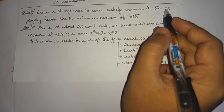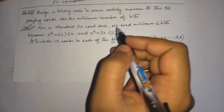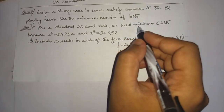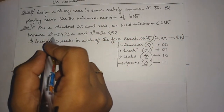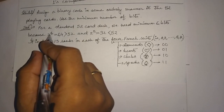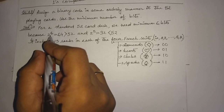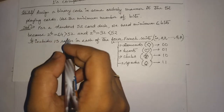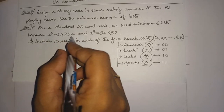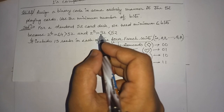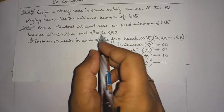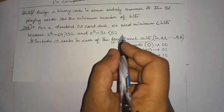We have 52 different types of cards in the standard card deck. For a standard 52-card deck, we need a minimum of 6 bits, because 2 to the power 6 equals 64, giving us 64 combinations, which is greater than 52. If we use only 5 bits, we get 32 combinations, which is less than 52, so 5 bits cannot accommodate all 52 cards.